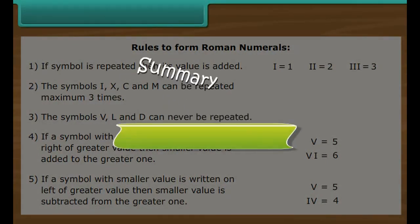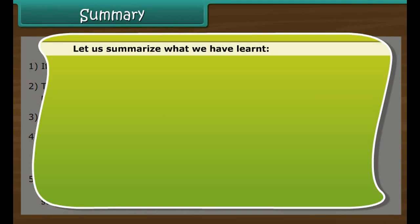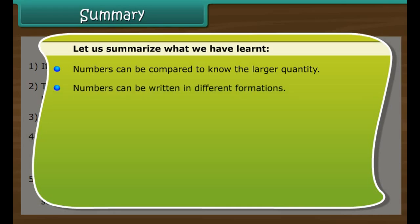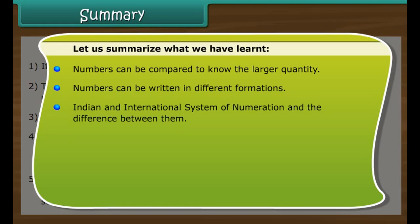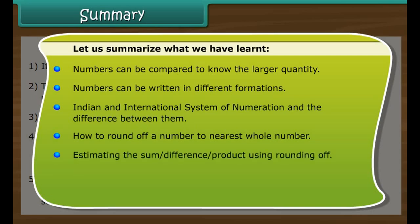Summary. Let us summarize what we have learned. Numbers can be compared to know the larger quantity. Numbers can be written in different formations. Indian and international system of numeration and the difference between them. How to round off a number to nearest whole number. Estimating the sum, difference, product using rounding off.